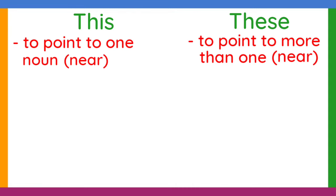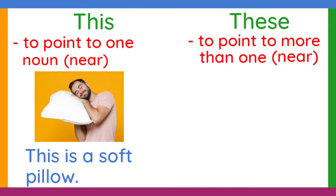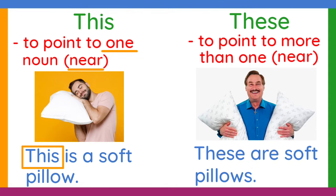Another one: this is a soft pillow. This is used in the sentence because the person is holding the pillow, and there is only one pillow. Now, let's have these. These are soft pillows. These is used here because the person is holding two pillows.